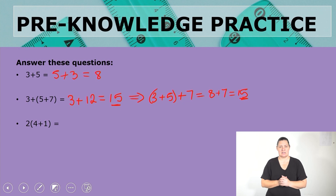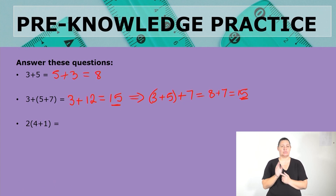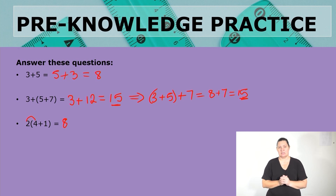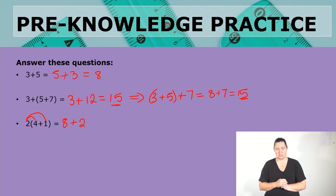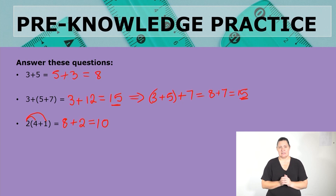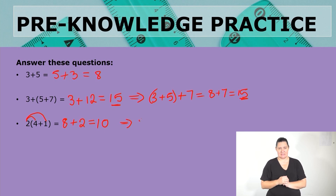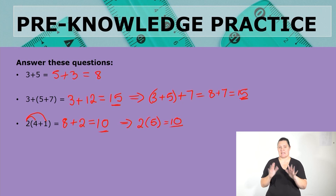The next example is two times the bracket four plus one, which demonstrates the distributive law. We distribute: two times four gives eight, and two times one gives two, so eight plus two equals ten. Of course you could simply add four and one in the brackets first to get two times five, which also equals ten. Different methods, same answer.